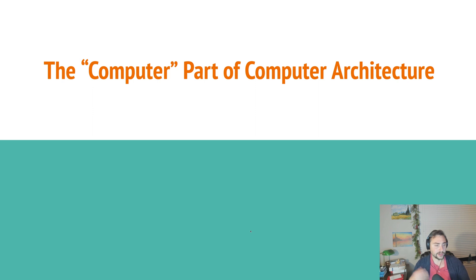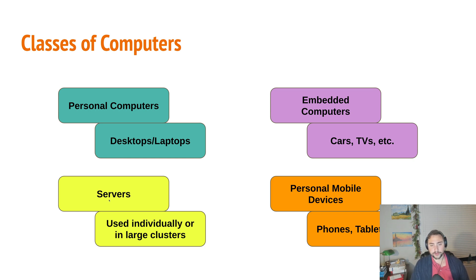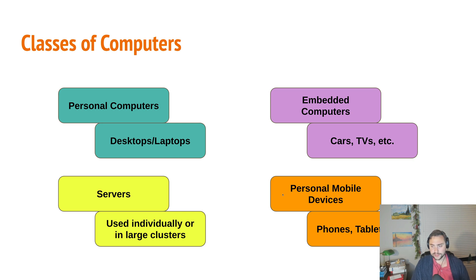So far we've been mainly talking about architecture — what about the computer part of computer architecture? What kind of computer systems do we design for? There are a few classes of computers that are important to think about: personal computers, including desktops and laptops; servers, which exist in data centers and as part of supercomputers; embedded computers, which are everywhere today, in our cars and TVs; and personal mobile devices, like phones and tablets. Between each of these classes of computers, we make very different decisions about our architectures and designs.